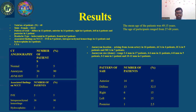Aneurysm size ranges: 2 to 4 mm in 17 patients, 4 to 6 mm in 11 patients, 6 to 8 mm in 5 patients, 0 to 2 mm in 1 patient, and 10 to 12 mm in 2 patients.